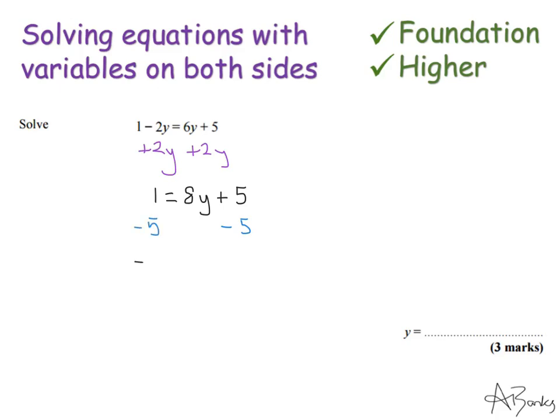I'm going to subtract 5 from both sides. So I get minus 4 equals 8y. And then divide both sides by 8. So minus 4 divided by 8 is minus 1 half. And that's what y is.